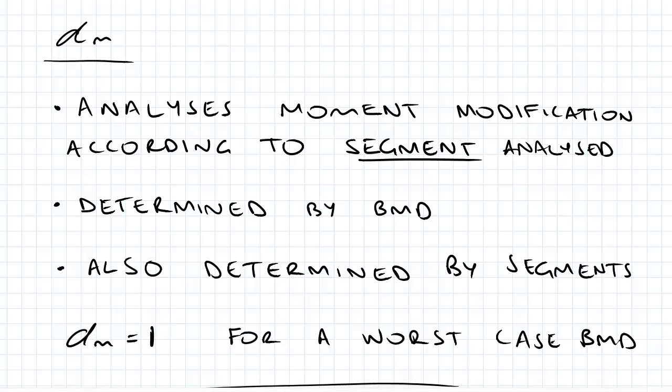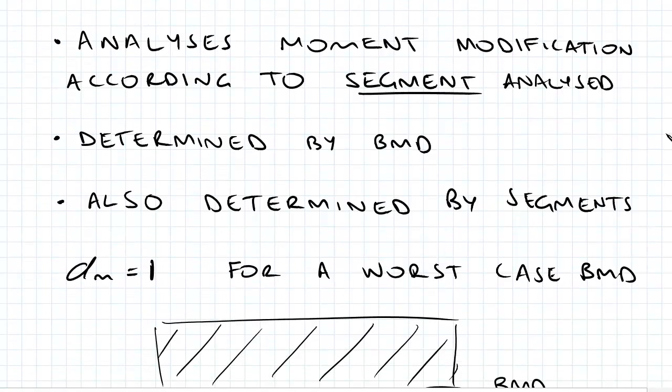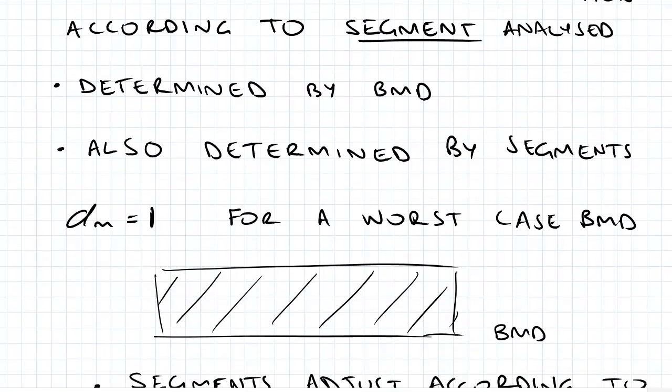One thing I mentioned previously was the whole concept of the segment and how that relates to effective lengths. Again, the concept of the segment is important for alpha m and understanding the moments. One of the key things, as I've mentioned for beams, is drawing a BMD. You need to really draw your BMDs.